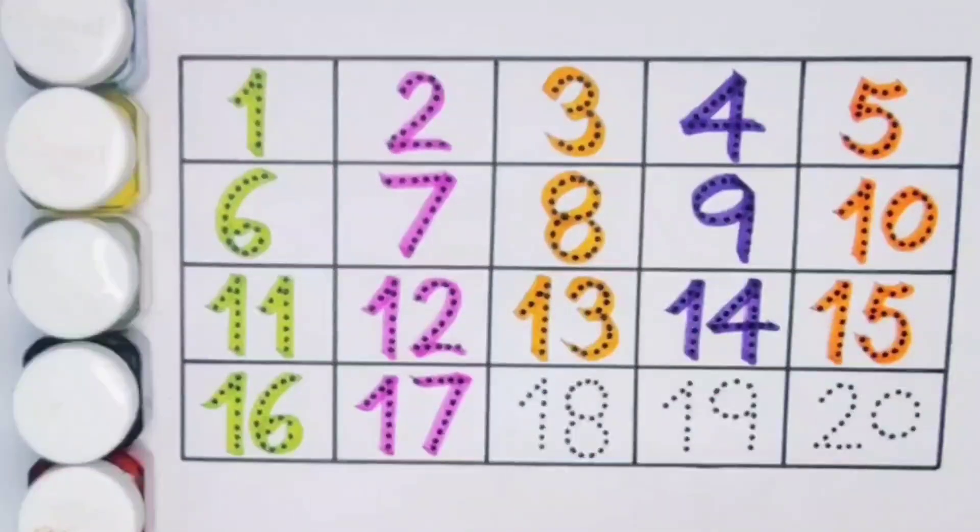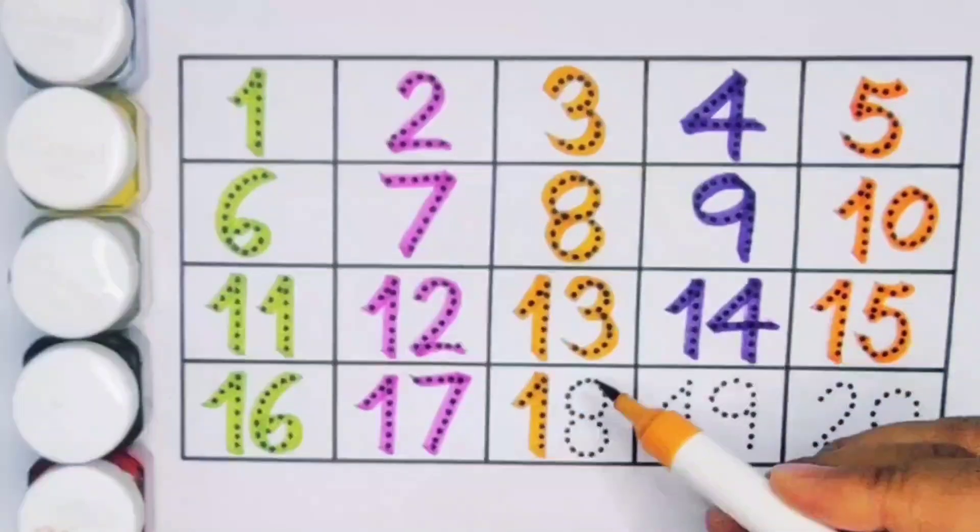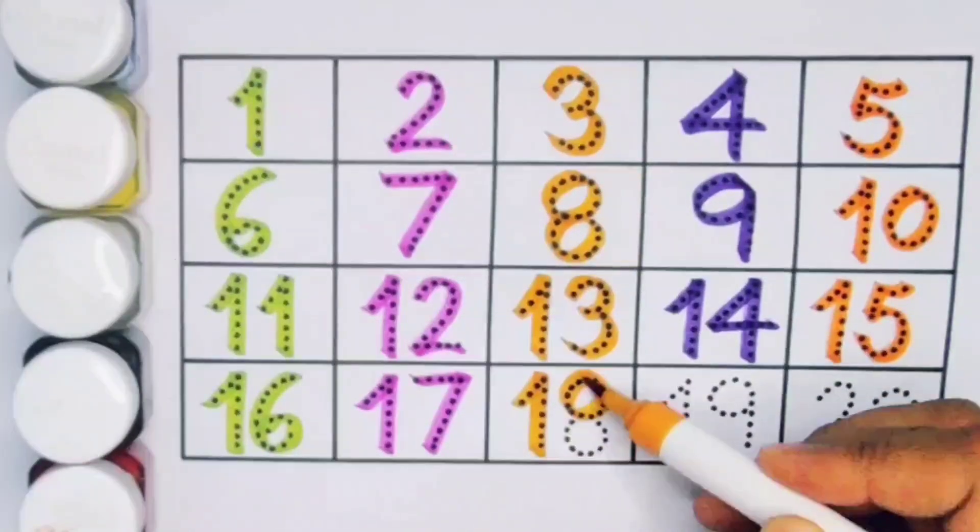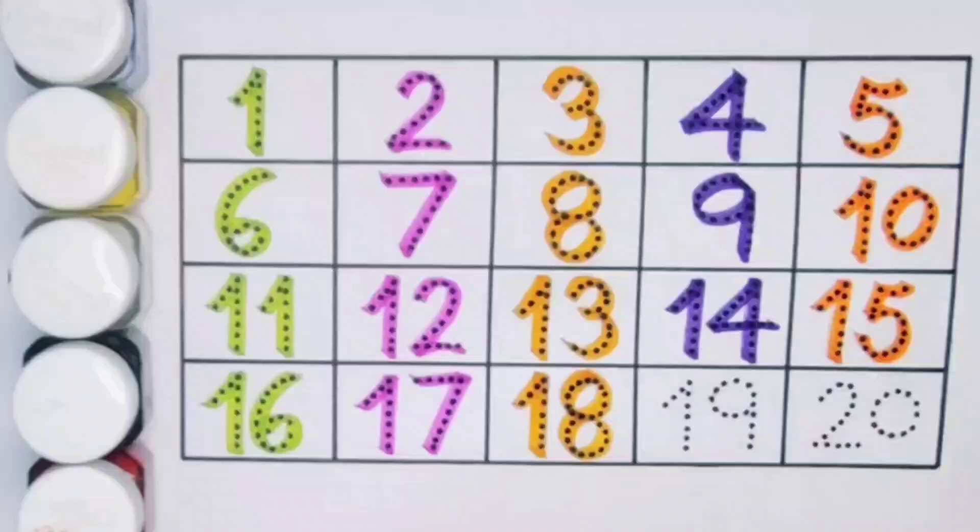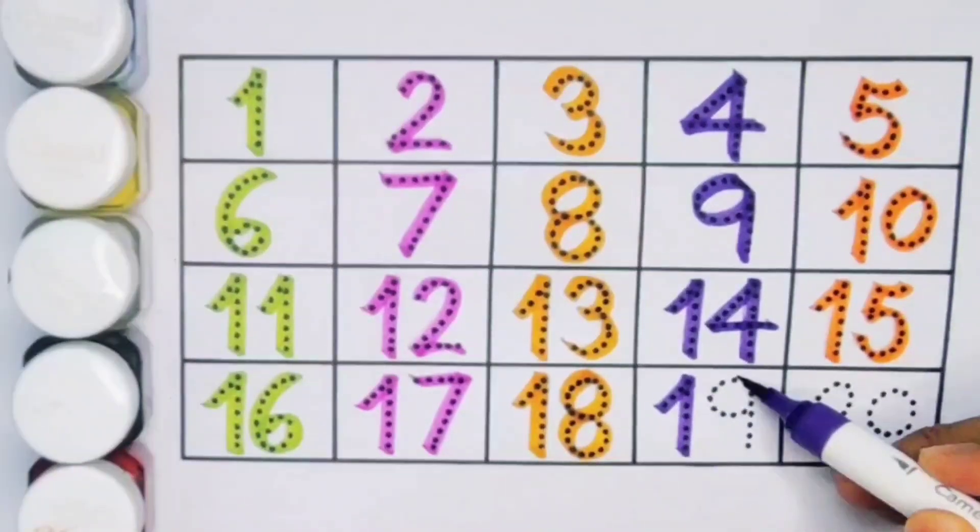Next kids, eighteen, one eight eighteen, number eighteen. Next kids, nineteen, one nine nineteen.